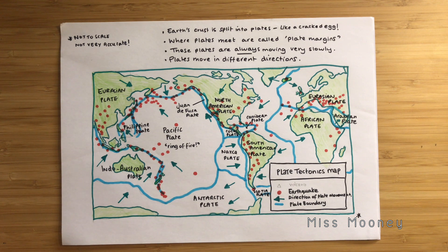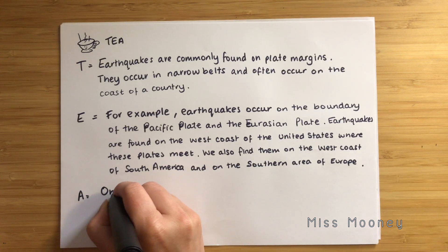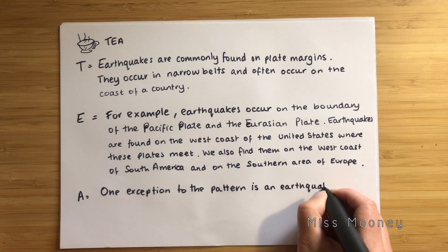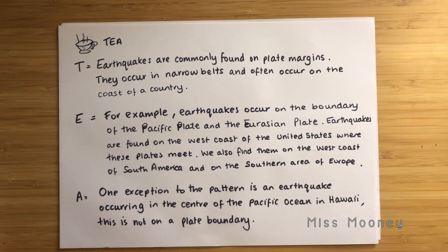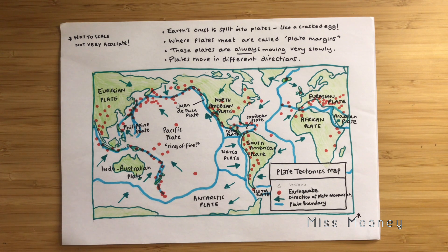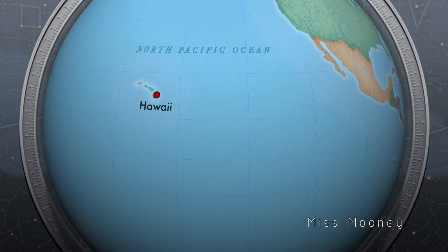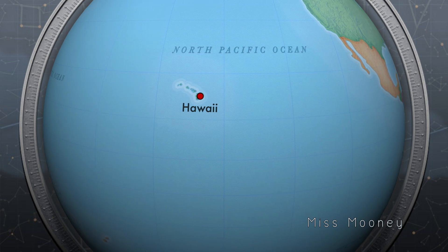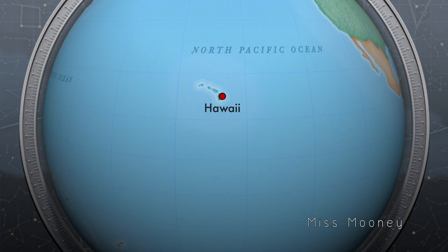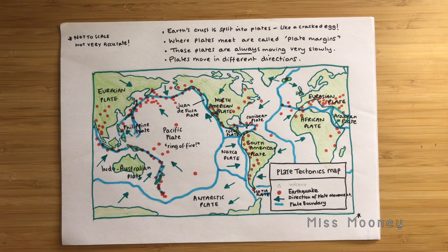And finally, our anomaly. You can probably see on the map that there are a few red dots that look a little out of place. One exception to the pattern is an earthquake occurring in the centre of the Pacific Ocean in Hawaii — this is not on a plate boundary and therefore is an anomaly. For this question we don't need to explain why Hawaii experiences earthquakes and volcanoes as it's not on a plate boundary, but it is still interesting to know: earthquakes and volcanoes can form in things called hot spots, where the crust is particularly thin and magma can break through to the surface — this is how the Hawaiian islands were formed. Also, some earthquakes don't occur on plate margins because they are caused by human activity such as underground mining or oil extraction.